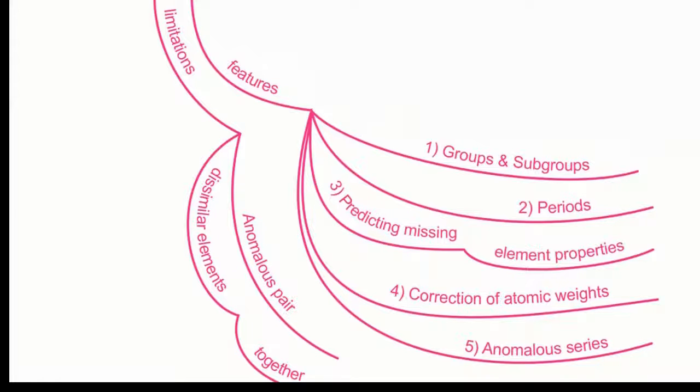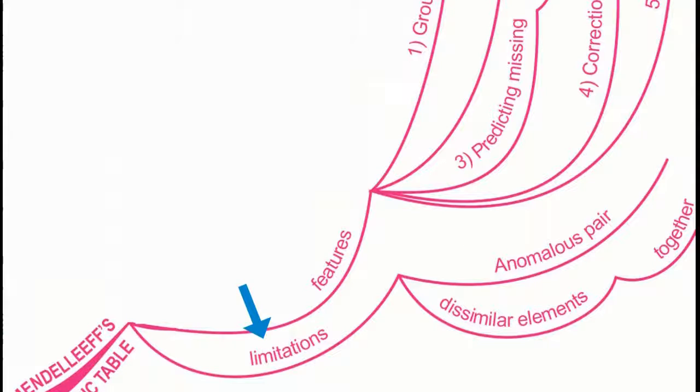Even his periodic table has some limitations. The limitations are anomalous pair and dissimilar elements are placed together.